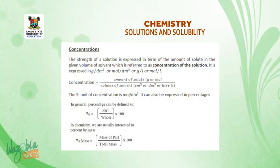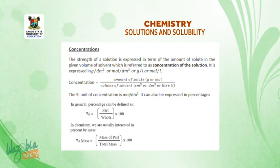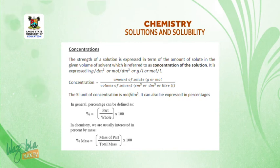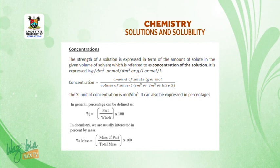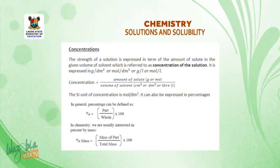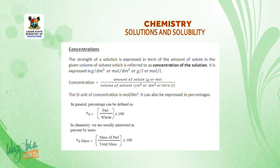Concentrations: the strength of a solution is expressed in terms of the amount in a given volume of solvent, which is referred to as the concentration of the solution. It is expressed in grams per dm³, moles per dm³, grams per liter, or moles per liter. Concentration mathematically equals the amount of solute over volume of solvent. The SI unit of concentration is moles per dm³. Concentration can also be expressed in percentages — percentage by mass equals mass of the part over total mass times 100%.